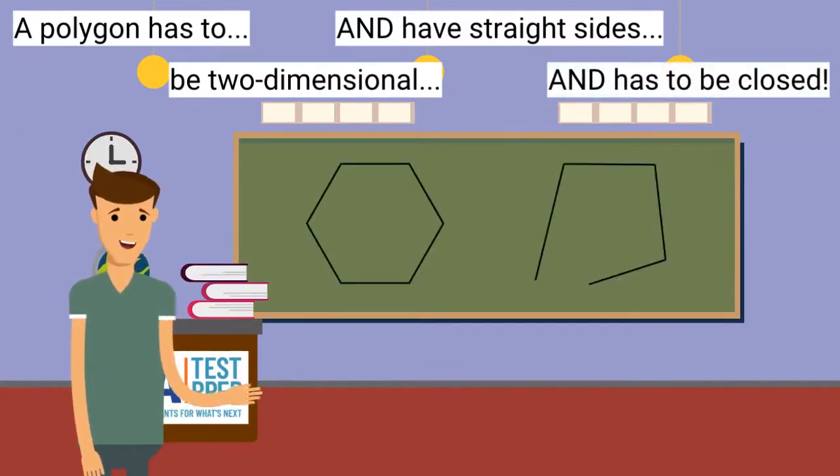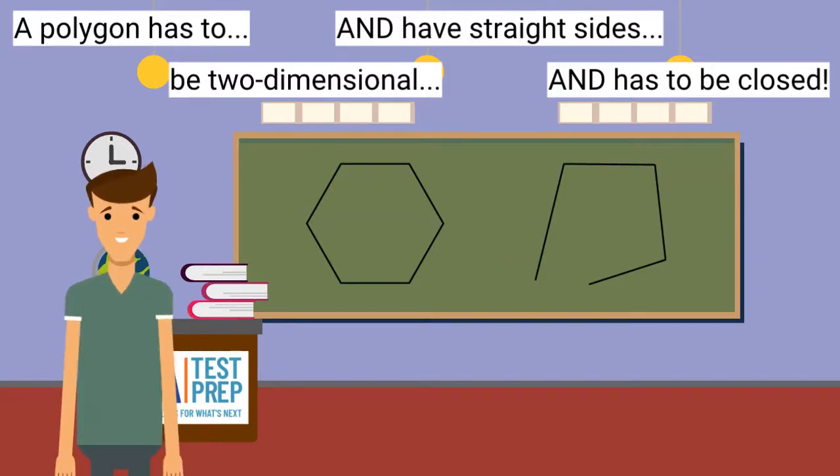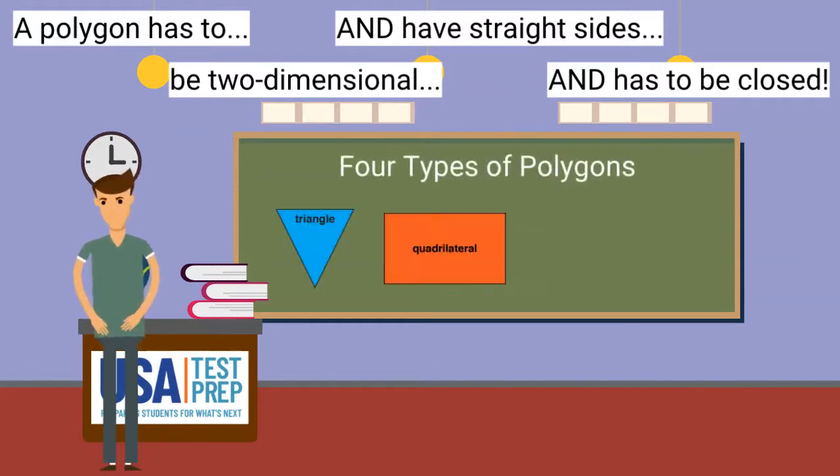Look at these two figures. Which of these is a polygon because it is closed? This is a polygon because it is a closed figure. We will be reviewing four different types of polygons today. Let's go to the chalkboard to review them.